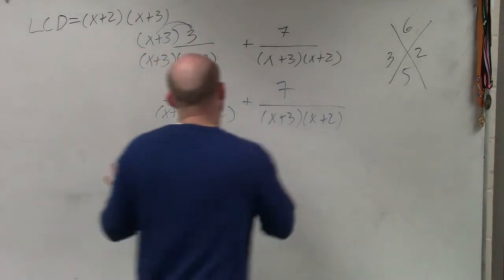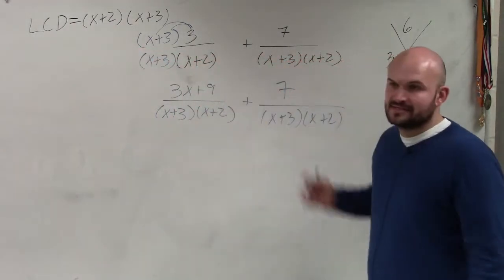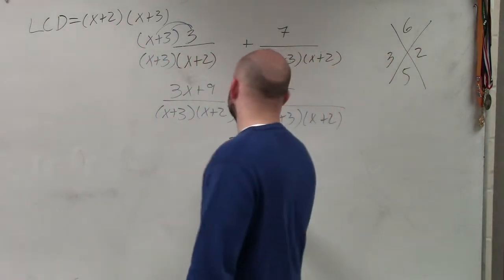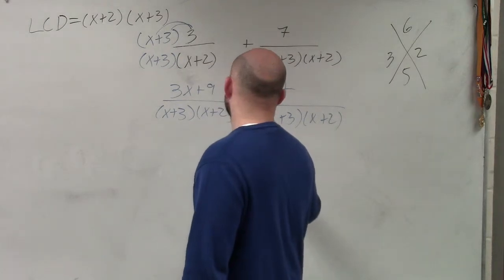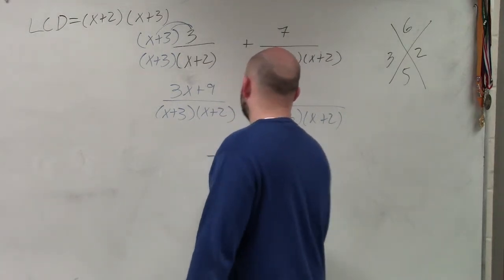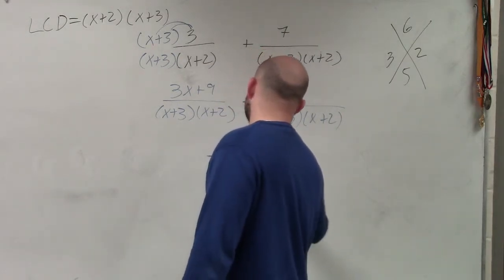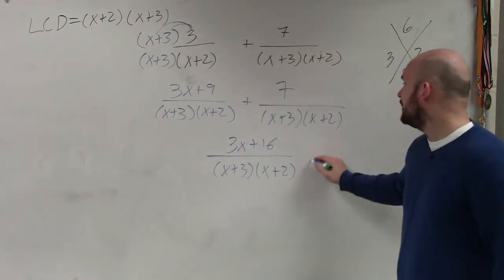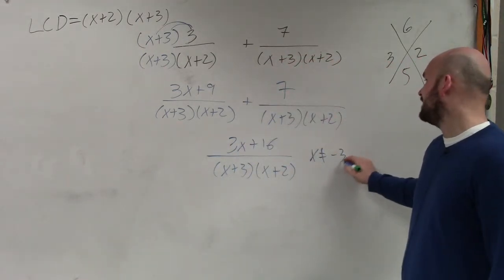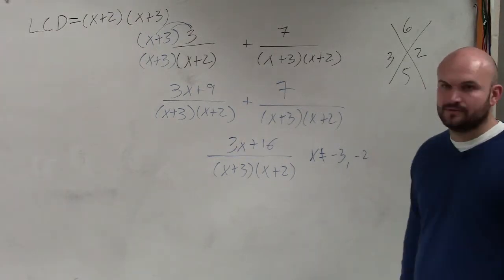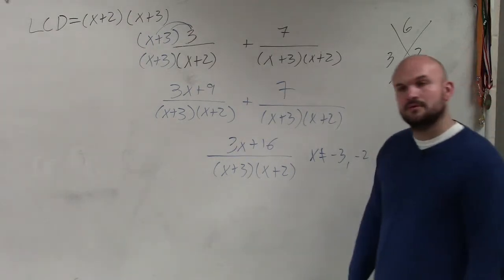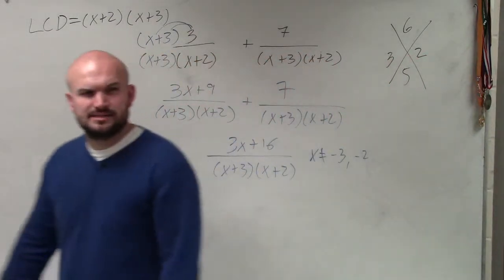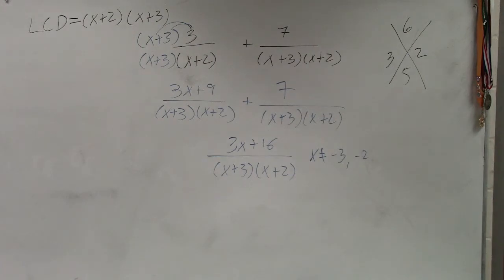You keep the denominators and add the numerators. The only thing I can add is the 9 and the 7, which is 16. So this becomes (3x + 16) divided by (x + 3)(x + 2), where x cannot equal negative 3 and negative 2. Everybody see that? It's really, really important.